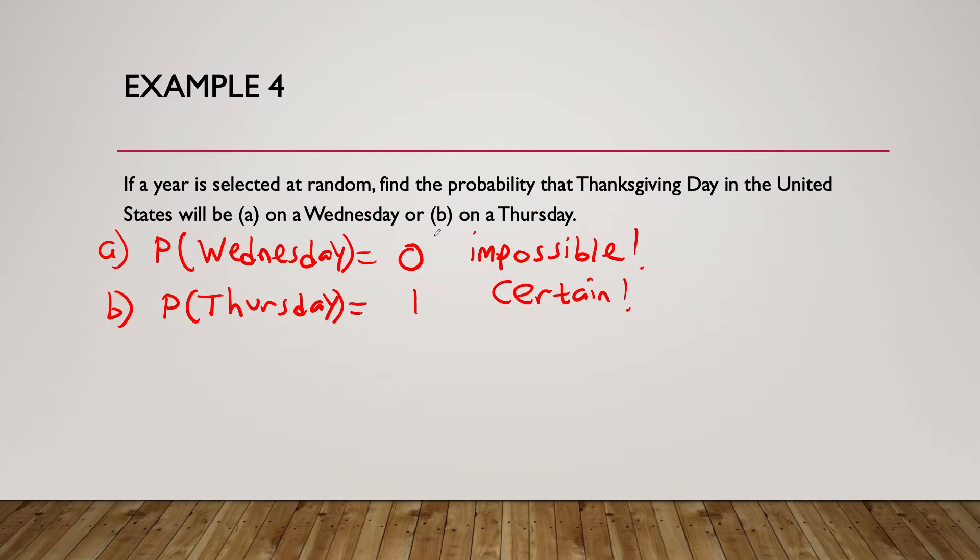If a year is sorted at random, we want to find the probability that Thanksgiving Day in the United States will be on a Wednesday. Thanksgiving is always scheduled on a Thursday, so the probability of it being on a Wednesday is zero, impossible. The probability of Thanksgiving being on a Thursday, as I was just saying, Thanksgiving is always on a Thursday, so that probability is one, certain to happen.